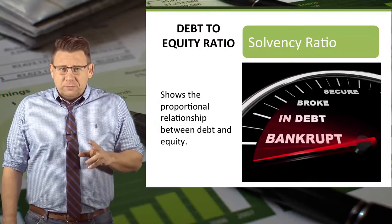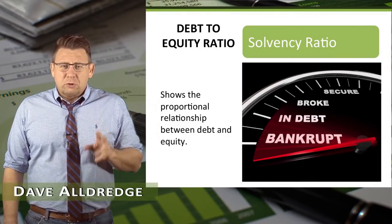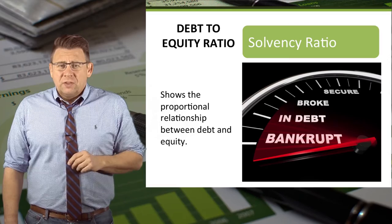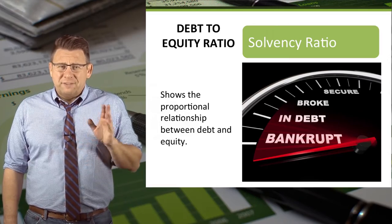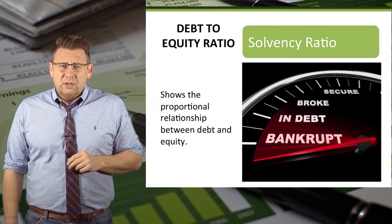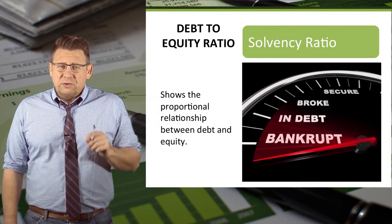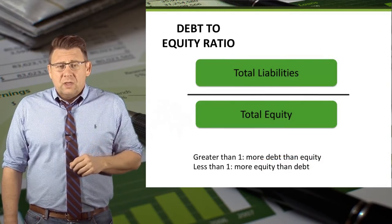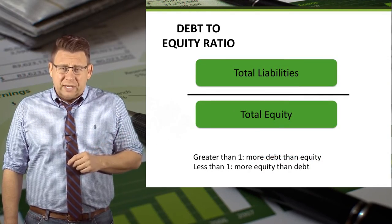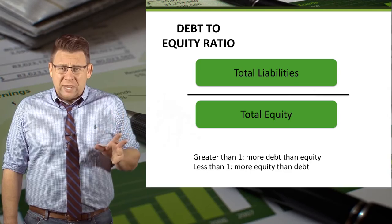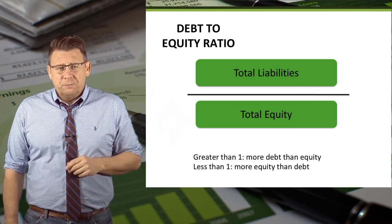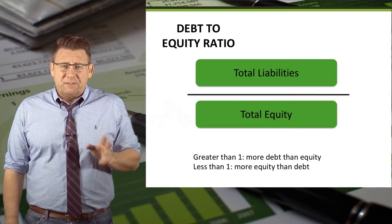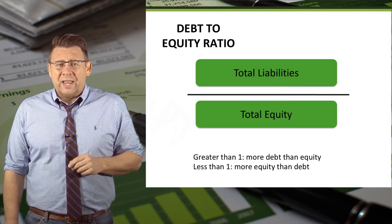The debt to equity ratio tells us the proportional relationship of total liabilities to total equity. This ratio is a variant of the debt ratio and is a measure of solvency. The debt to equity ratio is calculated as total liabilities divided by total equity. It tells us whether a company's assets are financed more by debt or by equity.